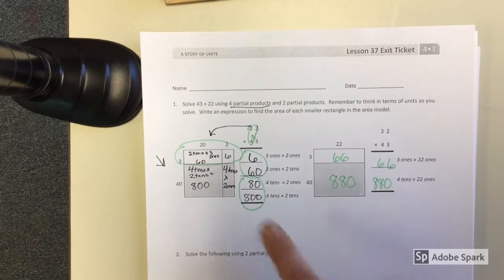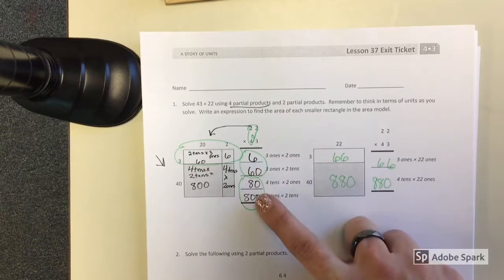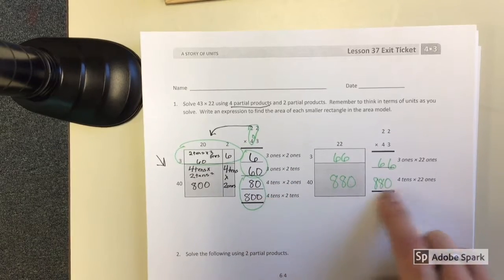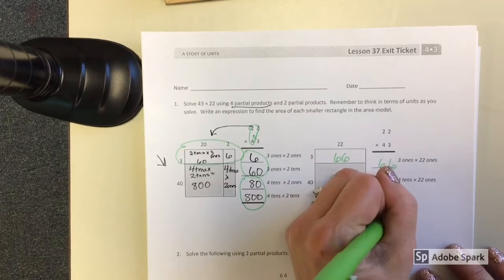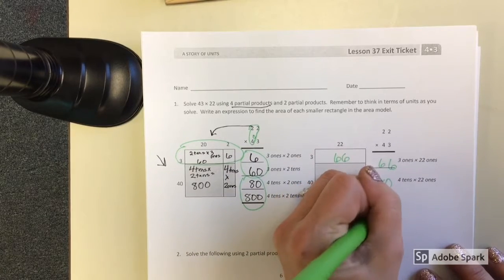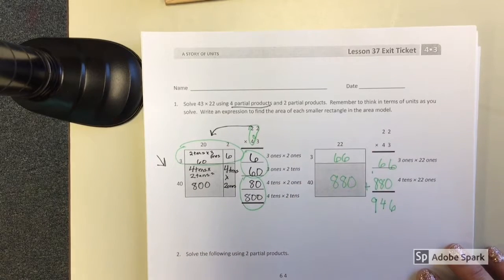So when you look over here, I've added these two together, and I've added these two partial products together. And that is going to get me 946.